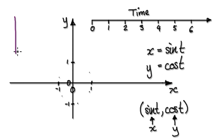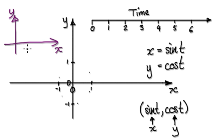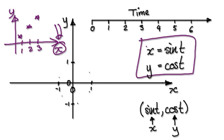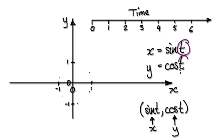With our normal, old method of drawing graphs, it would be: when x is 1, y is some value; when x is 2, y is some value; when x is 3, y is some value. It is the x that drives everything. But with parametric equations, it is a new parameter that drives everything.